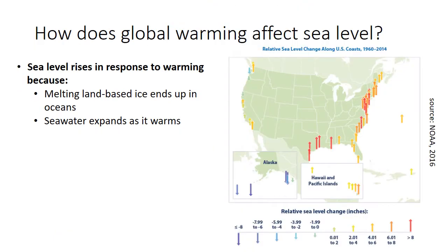Looking at how sea level has changed along coasts in the United States, for the most part sea level has gone up, though there are a few places where it's gone down. This map shows relative sea level change, which includes the effects of both rising sea level and changes in coastal land height. Some areas of coastline are subsiding — they're sinking — while others are rising up. Some places where we see a decline in relative sea level are where tectonic movements or melting ice on land are leading to uplift of those regions.